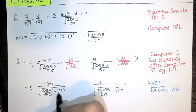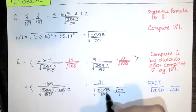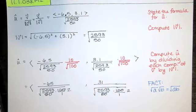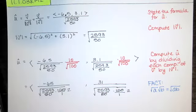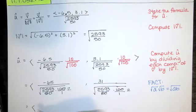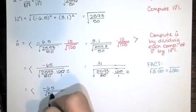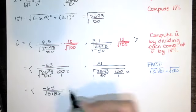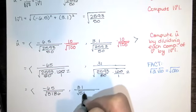And of course, the arithmetic from here is very simple. 50 goes into 100 twice, and 2593 times 2 is 5186. So we have negative 65 over the square root of 5186, and 31 over the square root of 5186.